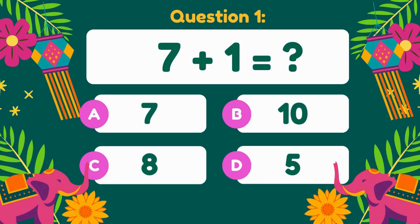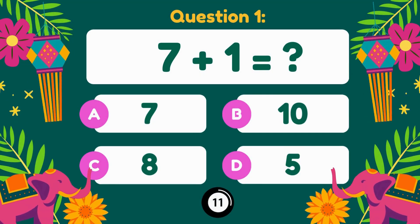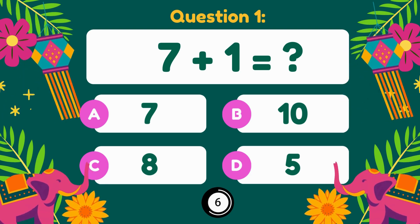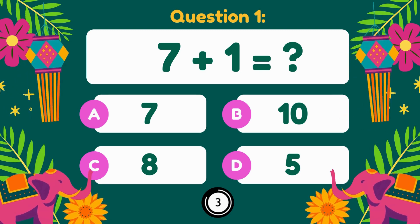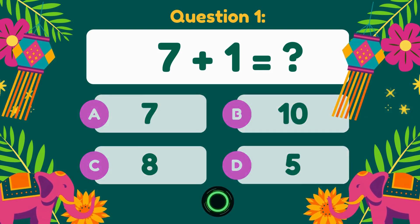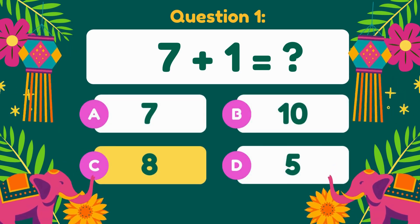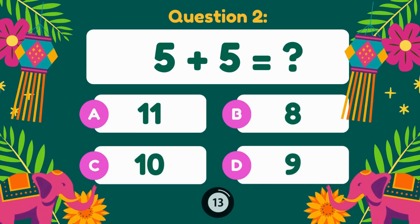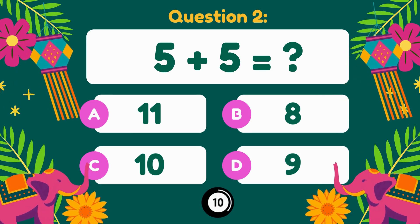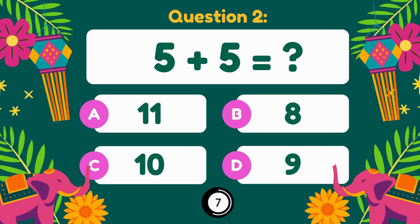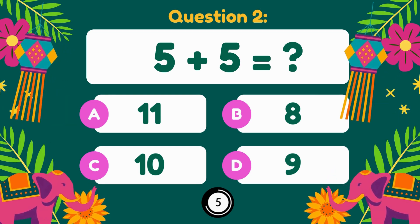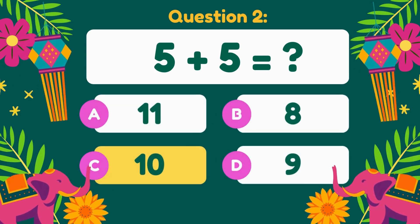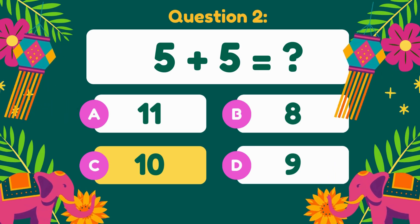7 plus 1 equals. 7 plus 1 is equal to 8. 5 plus 5 equals. 5 plus 5 is equal to 10.